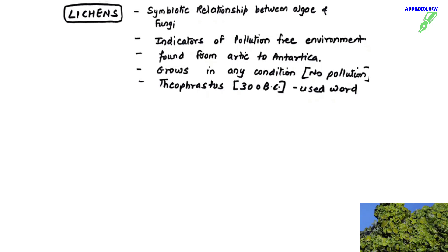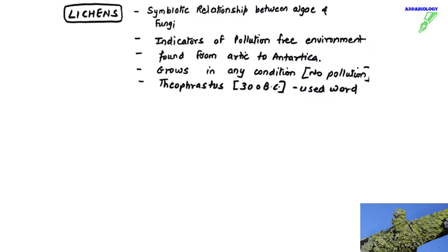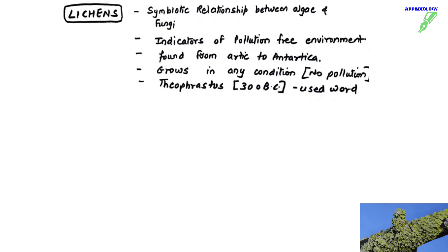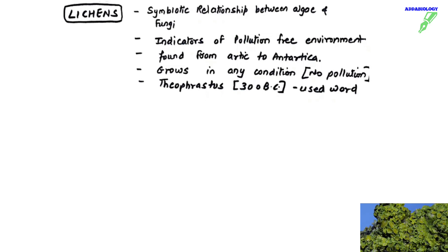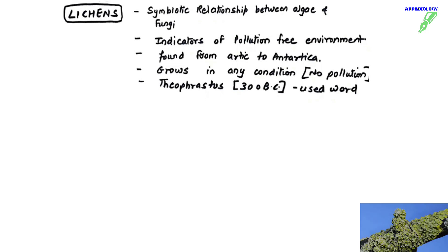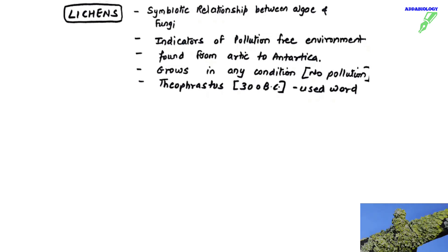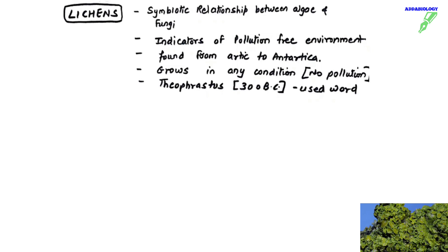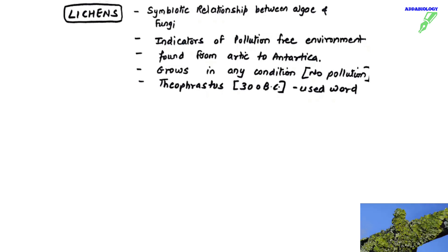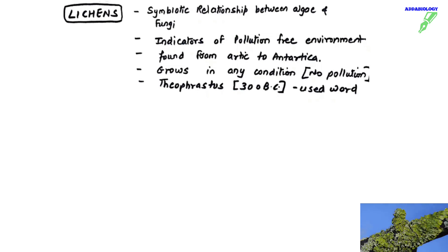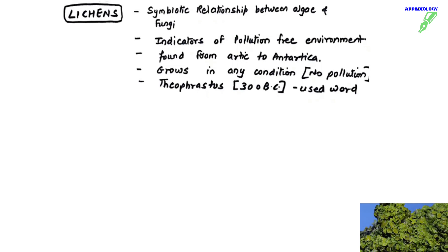Lichens are natural indicators of a pollution-free area. If you find lichens growing in any part of the world, you can be assured that area is pollution free. Lichens are found from Arctic to Antarctic. They can grow in all areas where even trees or plants cannot grow, but only under one condition — the area must be pollution free.